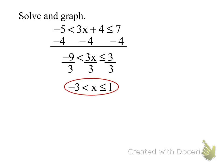Now divide all three sides by 3. When graphing the solution set, the starting point is negative 3 and the ending point is 1. At negative 3, the circle is open because it's only less than — not equal to. At 1, it's a solid circle because it's less than or equal to. So 1 is inclusive in the solution set, whereas negative 3 is not. Then draw the line.